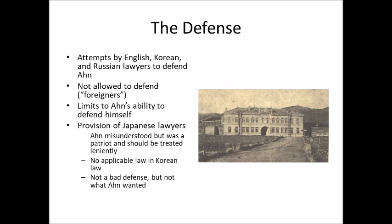The Japanese defense lawyers gave a competent defense. One argued that while Ahn misunderstood what Ito was doing, and granting that the Japanese colonial project was good, Ahn sincerely cared about Korea — he was a patriot and a good person, not a bad guy, and should be treated leniently. The other argued simply that Japan, even though it had jurisdiction, should apply Korean law since Ahn was a Korean subject, and since there was no applicable Korean law for killing someone outside Korea, he should be let go. This wasn't a terrible defense, but it wasn't what Ahn wanted.